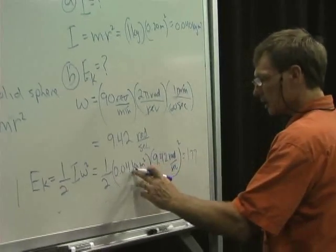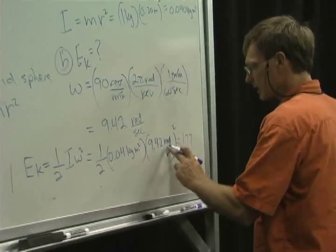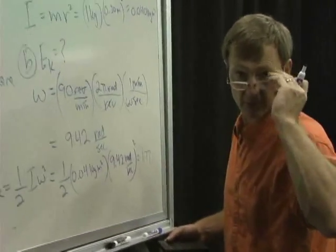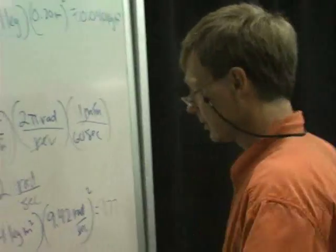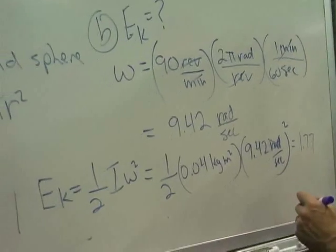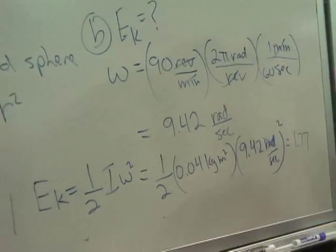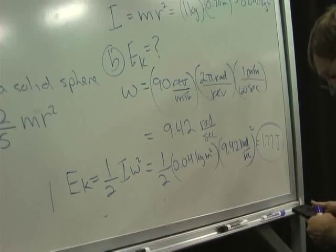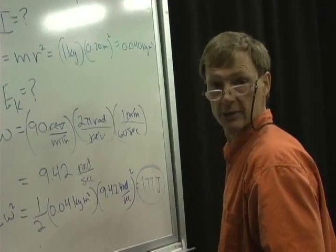Now, we've got kilogram meters squared times radians squared per second squared. The radians, we just dump them - that's just an accounting technique to make sure we know we're talking about angles. Forget those radians. We've got kilogram meters squared per second squared, which is a joule. So the answer is 1.77 joules, and that is rotational kinetic energy.